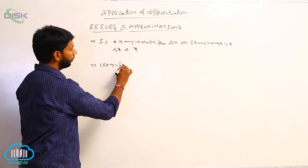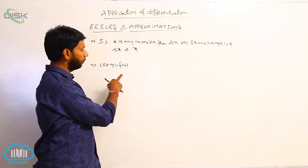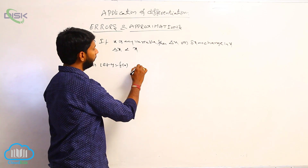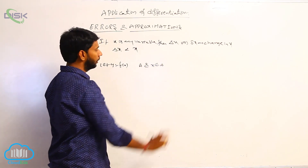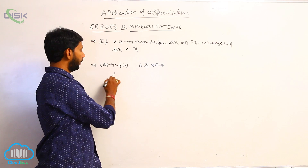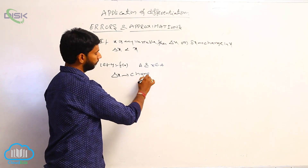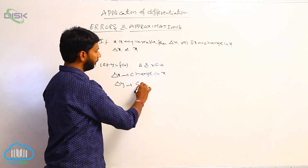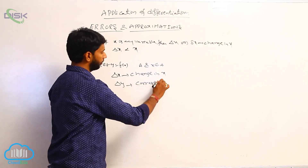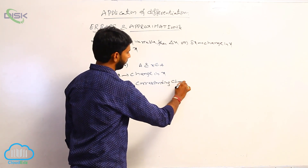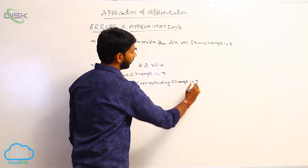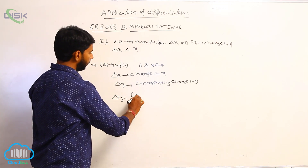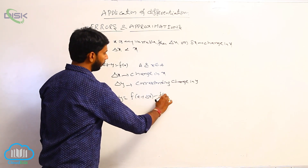Let y = f(x) be a function defined on an interval A, and x belongs to A. Delta x is called change in x, and delta y is called the corresponding change in y. Therefore, delta y = f(x + delta x) − f(x).